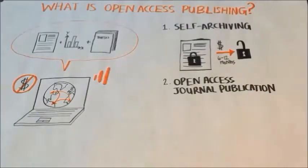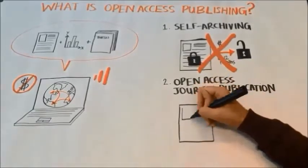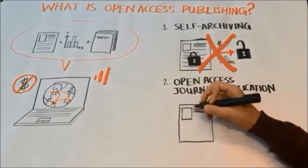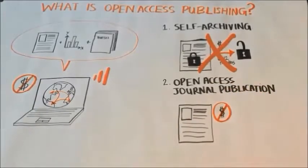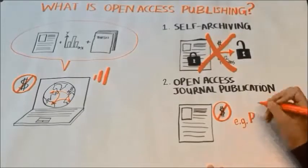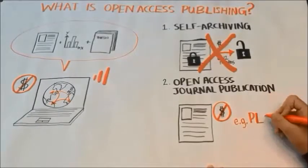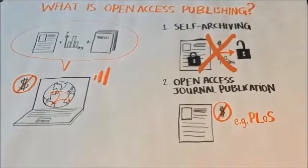Self-archiving where there is an embargo period does not meet Grand Challenges Canada's open access requirements. Open access journal publication is when the publishing journal itself makes the scientific information immediately available online for free. Articles may be published in pure open access journals, such as PLOS, or in hybrid open access journals that provide an option to publish on an open access basis, typically for an article processing fee.